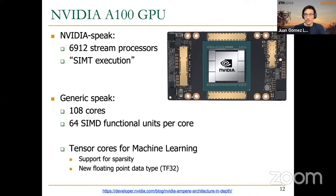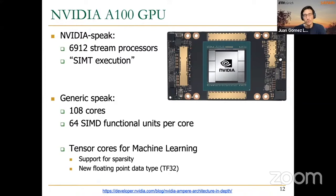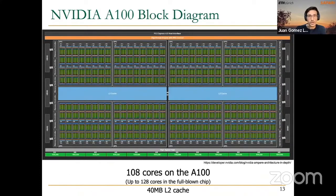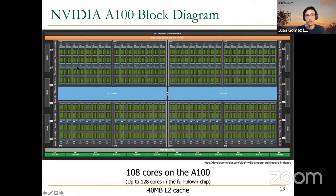HBM memory, even though expensive, has the big advantage of providing very high bandwidth — much higher than conventional DDR memories. It has been used in real systems for a while. NVIDIA GPUs started incorporating HBM memory in the Pascal architecture back in 2016. More recently, in 2020, NVIDIA released the A100 architecture, which also uses HBM2 memory. You can identify the HBM2 stacks in the A100 block diagram — three stacks on each side, each connected to the GPU through two memory controllers.